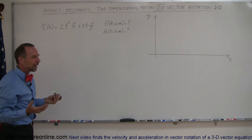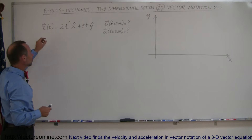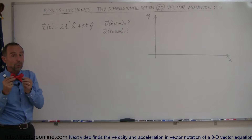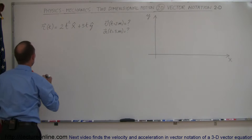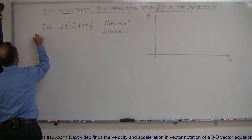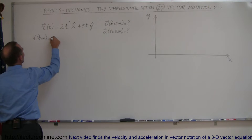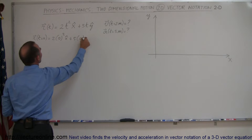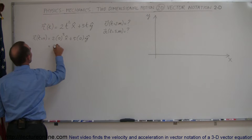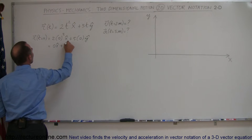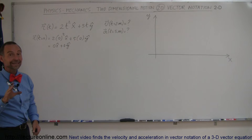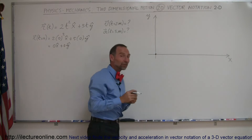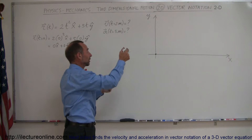These are vectors that point to where the object is at any point in time. Let's find the position vector when t equals 0. That's equal to 2 times 0 squared in the x direction plus 5 times 0 in the y direction, which gives 0 in the x direction plus 0 in the y direction. So at t equals 0, the object is at the origin. The position vector relative to the origin is a zero vector because the object is right there at the origin.